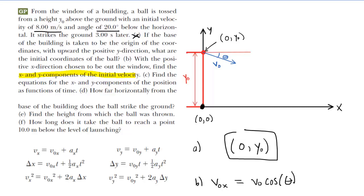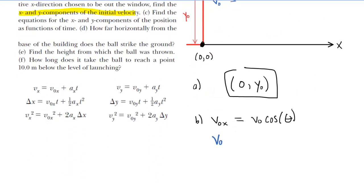Where you could get into some trouble is simply and naively using 20 degrees as your angle. When you measure an angle in mathematics and physics, if the angle is measured in a clockwise fashion, then the angle will actually have a negative value. The ball is tossed below the horizontal, so the velocity vector is pointing down and to the right — a clockwise direction — and therefore the angle will actually be negative. So in the x-direction, we take the initial speed of 8 meters per second and multiply it by the cosine of negative 20 degrees. Make sure your calculator is set to degree mode. 8 multiplied by cosine of negative 20 is about 7.52, so the initial velocity in the x-direction is 7.52 meters per second.